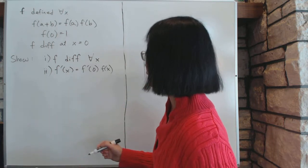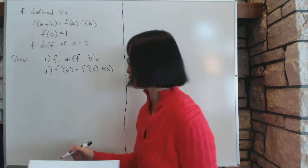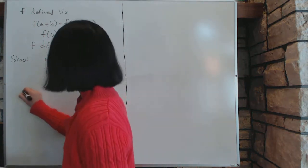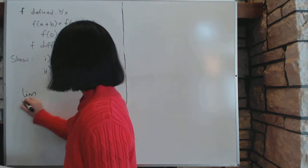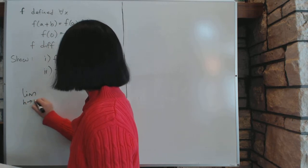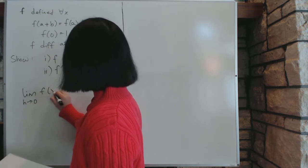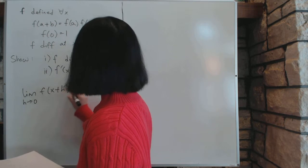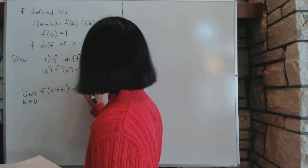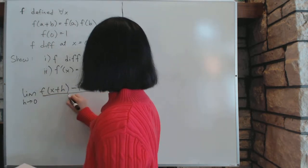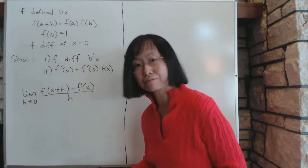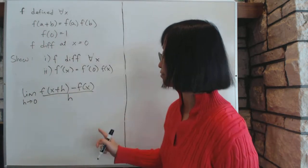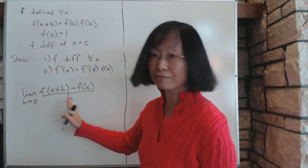So to prove this, we're going to consider the definition of f'(x). f'(x) is defined as the limit of h approaching 0 of [f(x+h) - f(x)]/h. This is one of the formulas for calculating f', and this is f' if it exists.